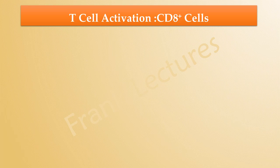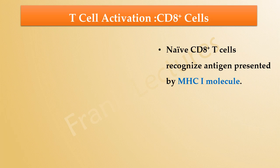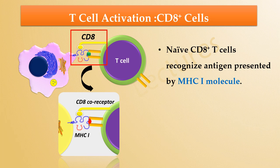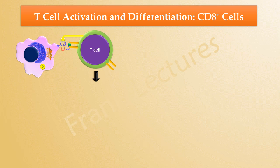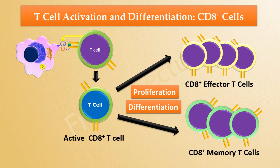The activation of CD8-positive T-cells is similar with a few differences. Naive CD8-positive T-cells recognize antigen presented by MHC-1 molecules. Co-stimulation of these cells also occurs via interleukin-2 and other cytokines produced by helper T-cells that recognize and bind the same antigen. Once activated, these CD8-positive T-cells generate effector T-cells and memory T-cells.